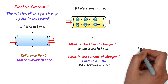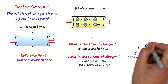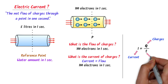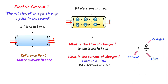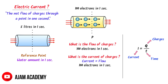Therefore, I write: I is equal to Q upon T, where I is the current, Q is the amount of charges, and T is the time in seconds. Thus remember that current is defined as how much charge passes through a point P in one second.